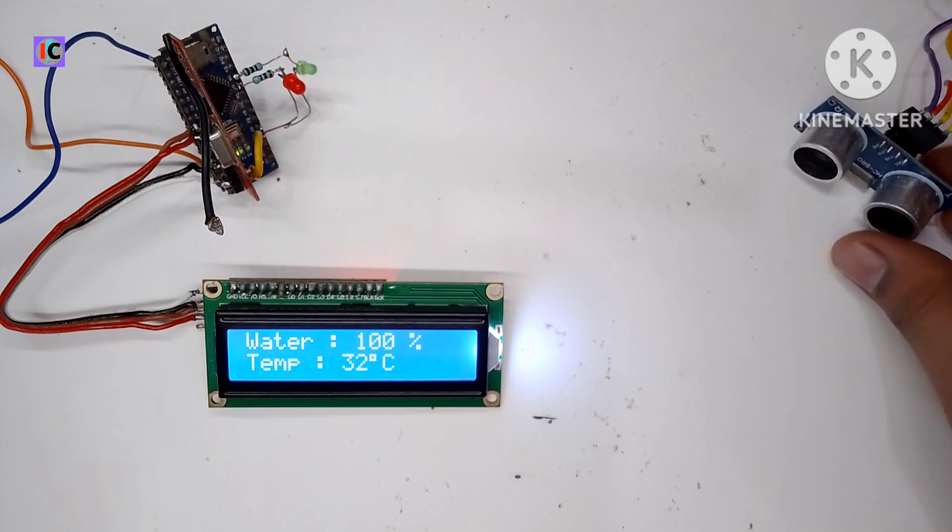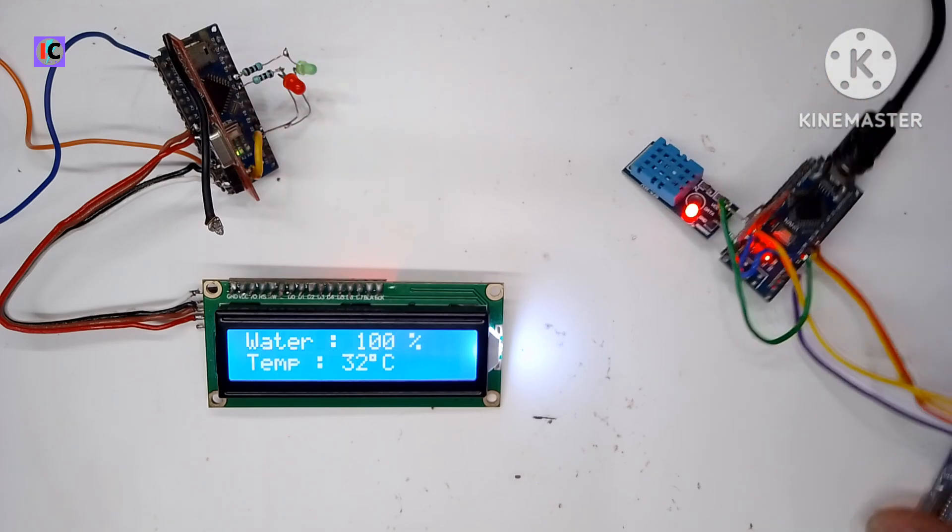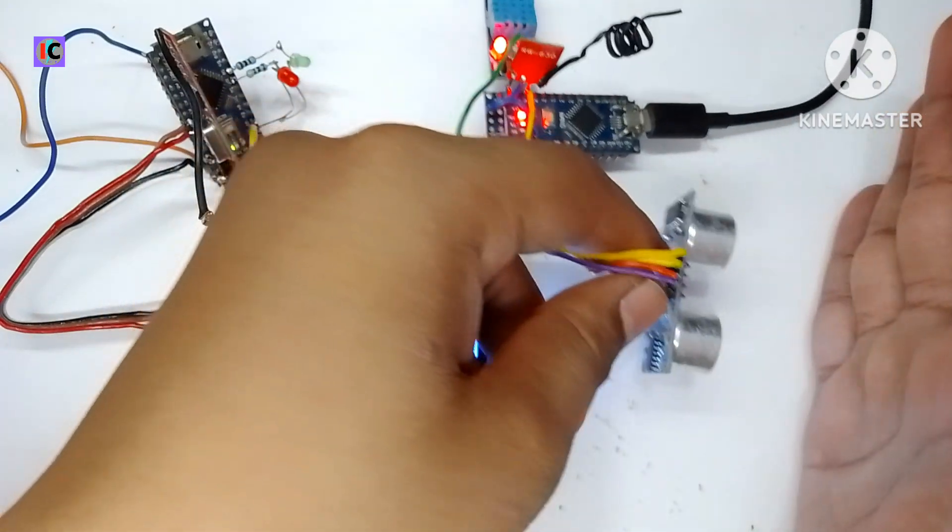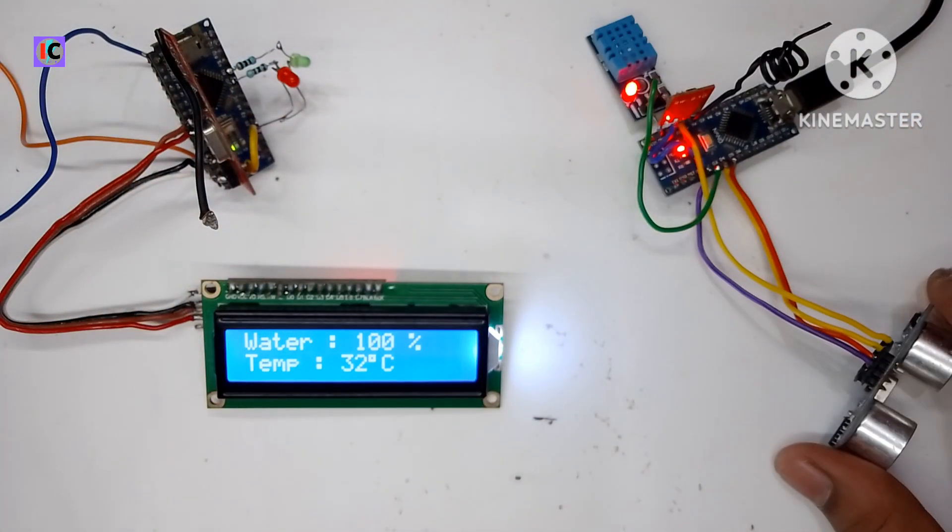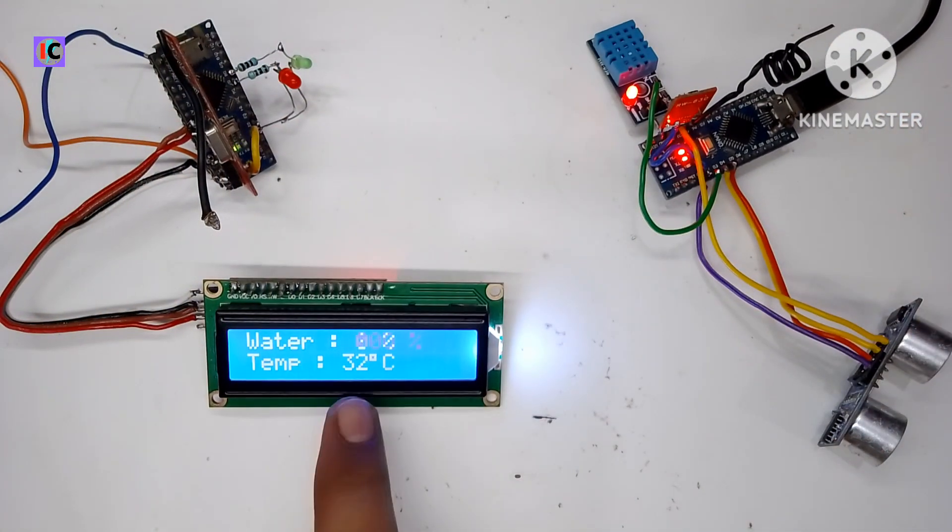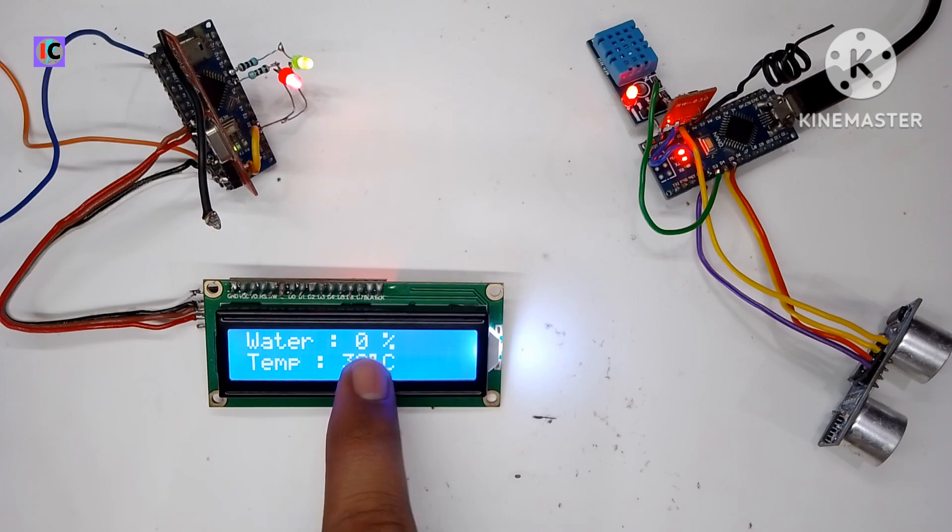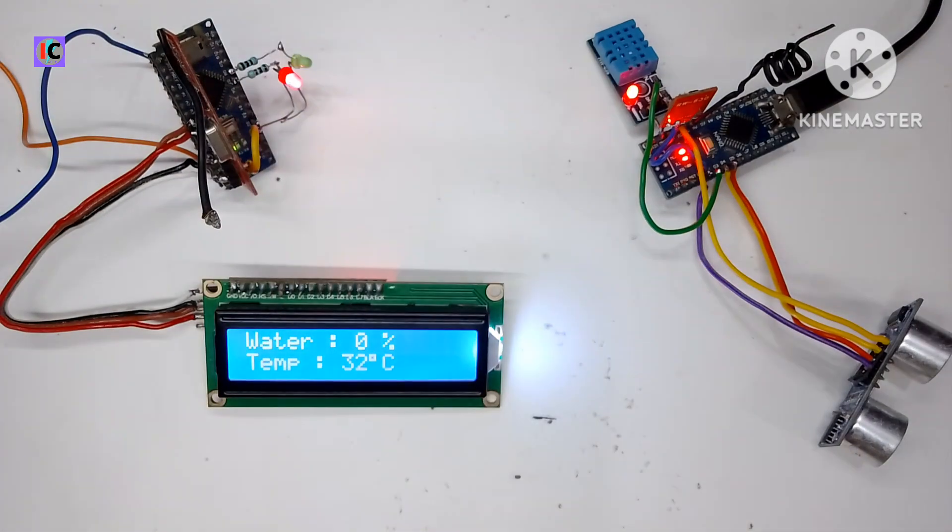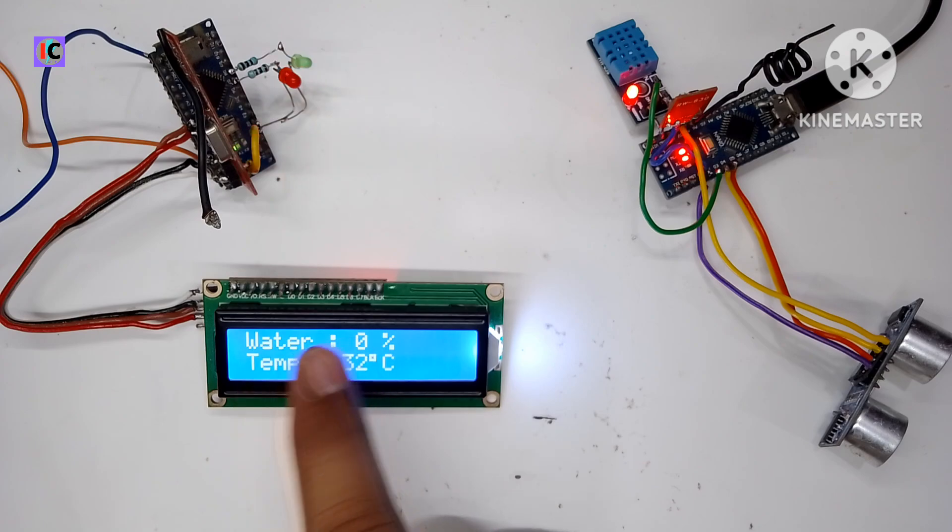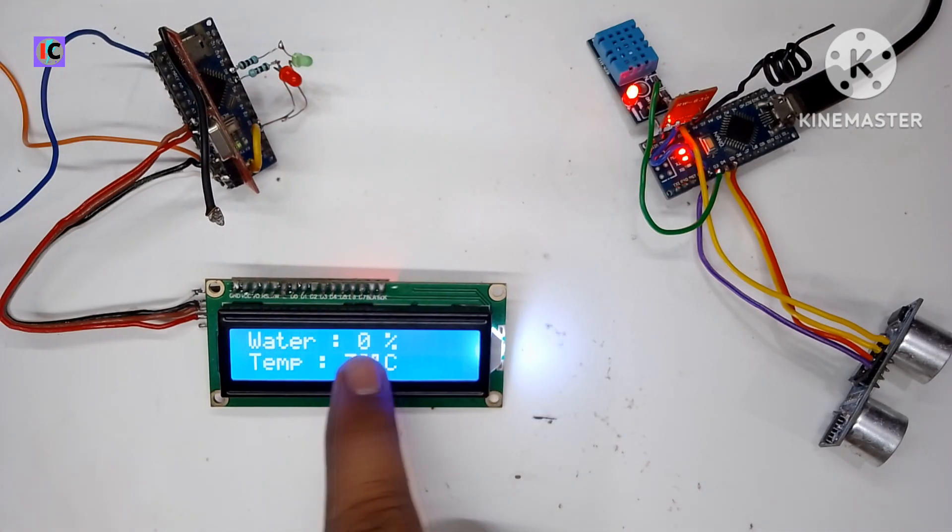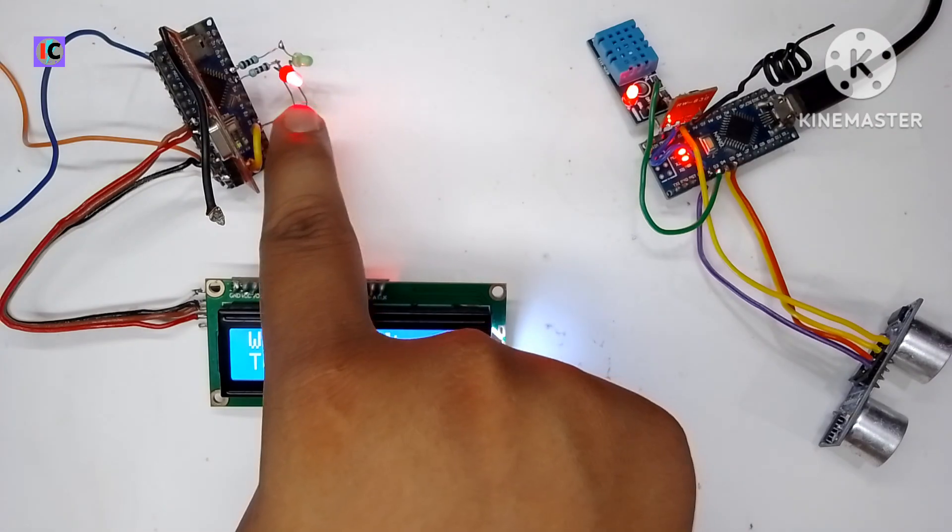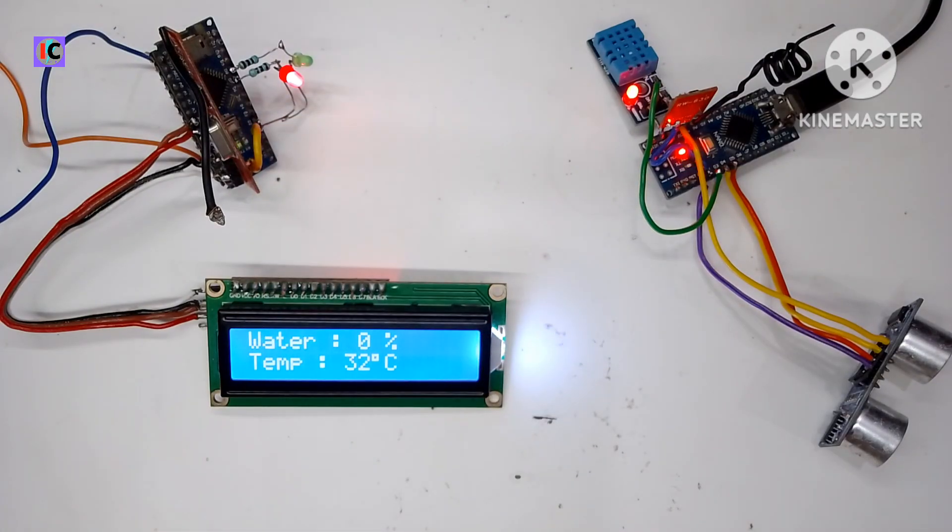This is very smooth in operation. I have added some code to blink the red LED when the water percentage goes below 30 percent. The red LED will blink continuously until the level goes above 30 percent. Also, the green LED will blink for 10 seconds when the water level goes below 30 percent.